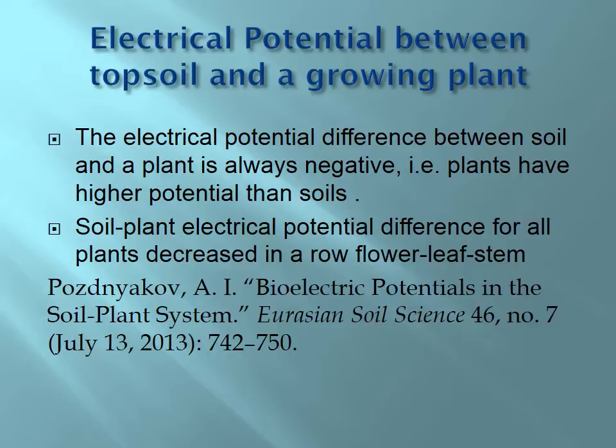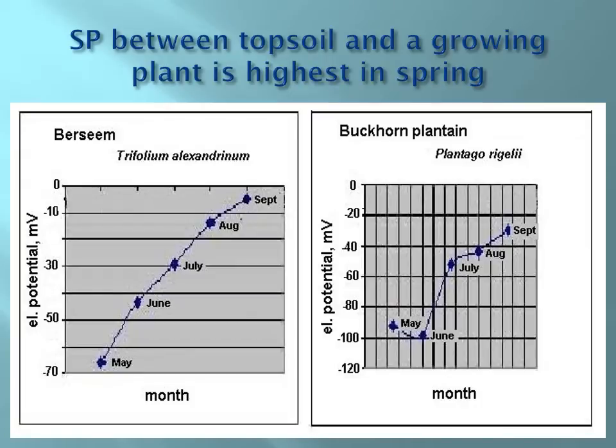We proved that the electrical potential difference between soilless plants is always negative — meaning plants have a higher potential than soil — and that electrical potential decreases in order from flower to leaf to stem. More information is available in a publication by Poznikov in Eurasian Soil Science in 2013, where it was proven that self-potential between topsoil and the growing plant is highest in the spring and then decreases over the fall when plants are preparing for dormancy.